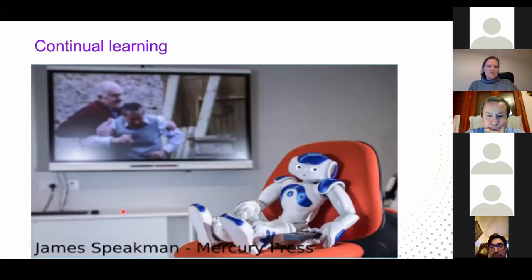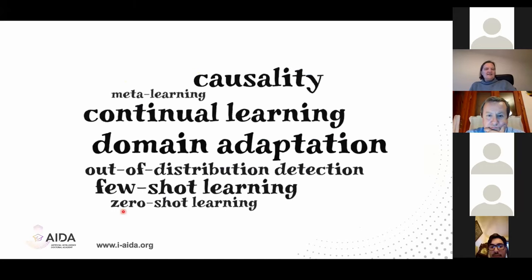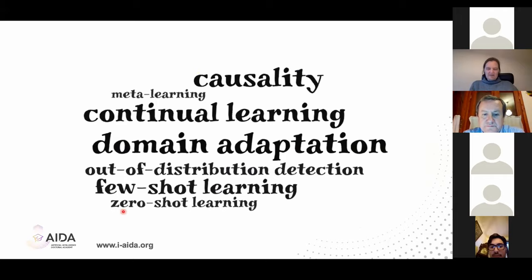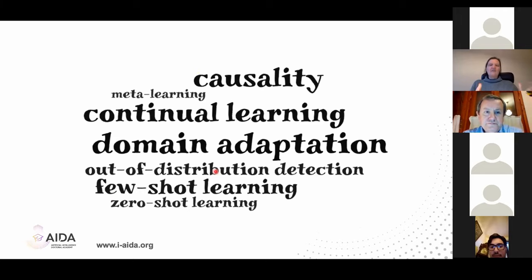Apart from continual learning, there are many related fields that look at related aspects. There's domain adaptation, meta-learning, few-shot learning, out-of-distribution detection, and research on causality that deals with dataset bias. There could be a lot of interaction between these fields, with ideas flowing from one to another. All of them are probably aiming to move beyond the standard machine learning setting — the default we all learned in our basic AI course — and I think it's time to leave that setting and move beyond it.